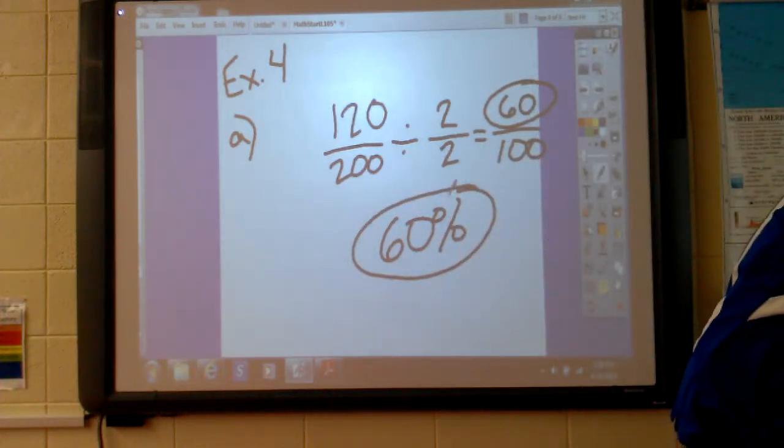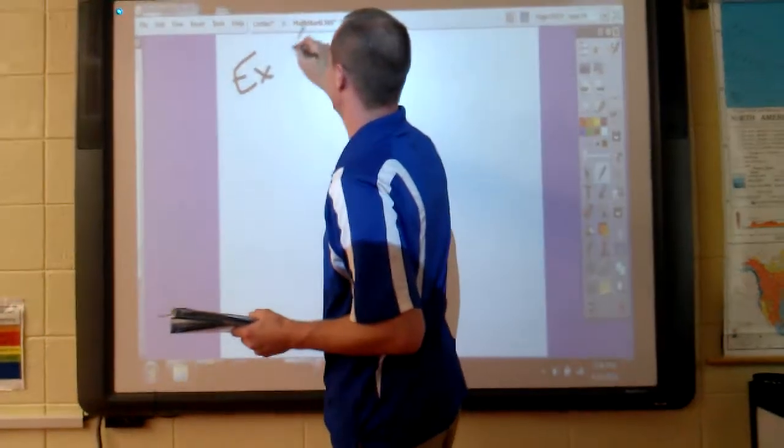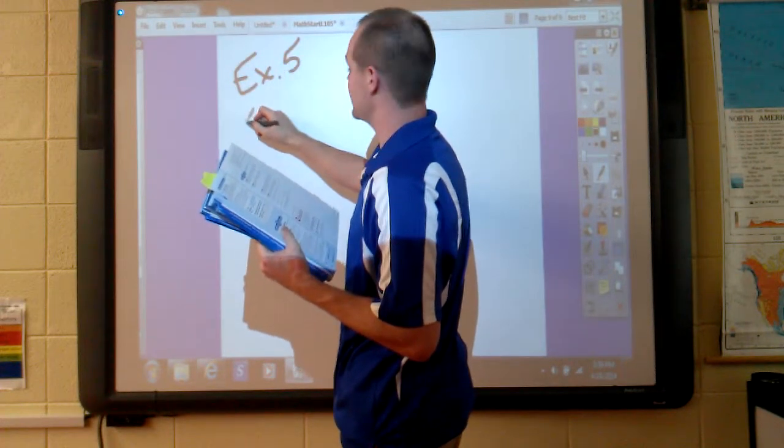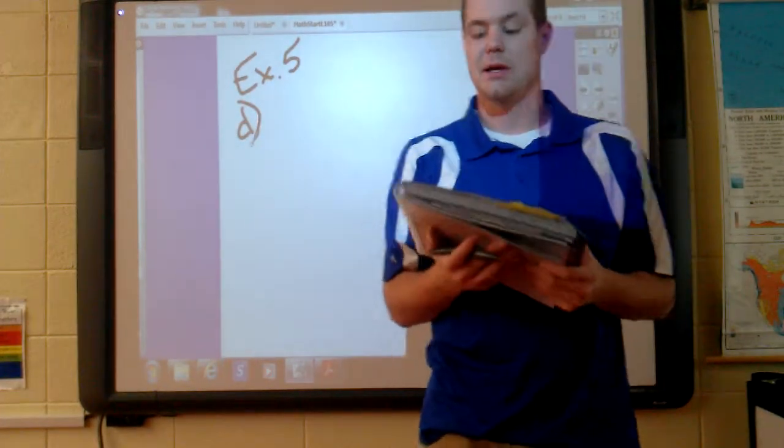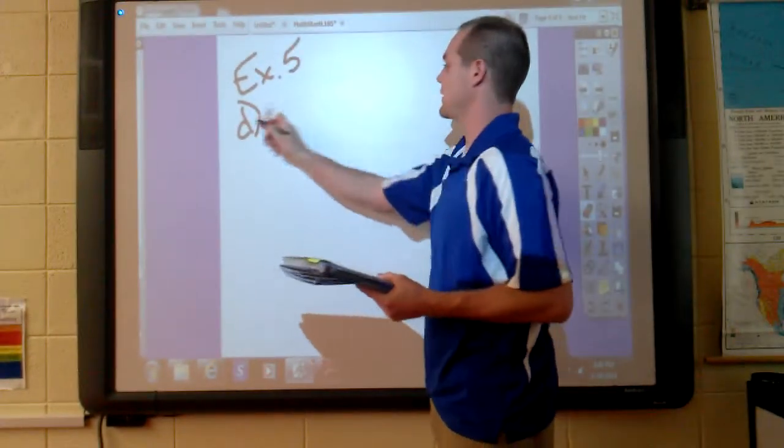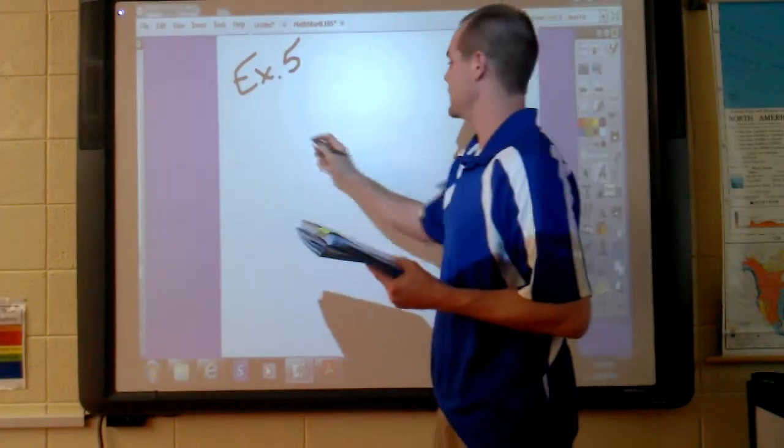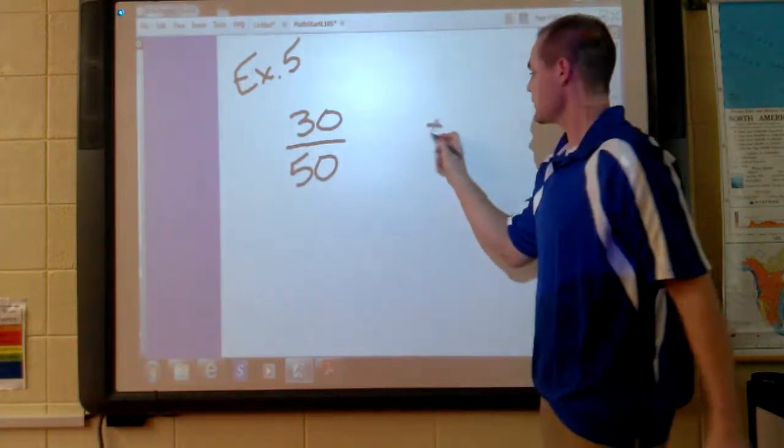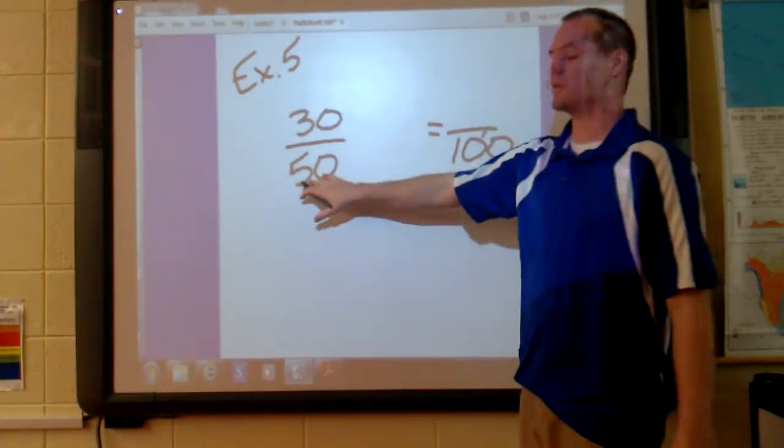The next one we'll do, write this down for example number 5. This is lesson practice. Let's do lesson practice D. Lesson practice D says 48 out of 200 is what percent? Let's not do that one. That's the exact same as the last one. 30 out of 50 is what percent? Again, we need to get to a denominator of 100. This number is, of course, smaller than 100, so we multiply. 50 times what is 100?